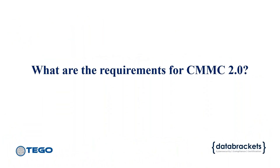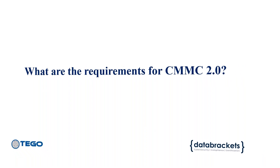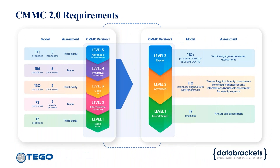Next we'll talk about the requirements for CMMC — what is FCI and CUI — and then get into how we can help with implementation. Most clients in this audience are going to be shooting for Level 2. Some may be Level 1: those with only federal contract information can do Level 1, and it can be an annual self-assessment.